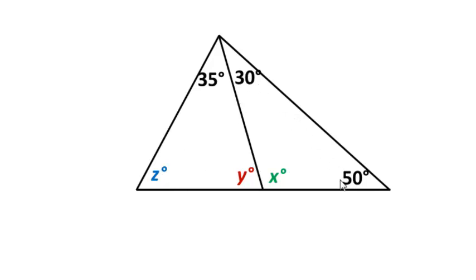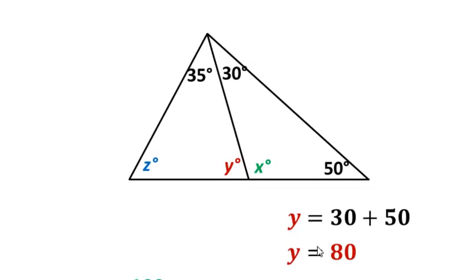So if I were to add these together, 30 plus 50 equals y, and then simplify, well then that means that this exterior angle here is 80 degrees. I'm going to replace that y with 80.